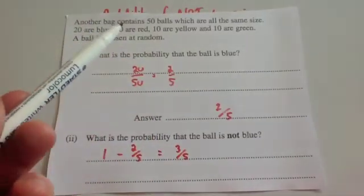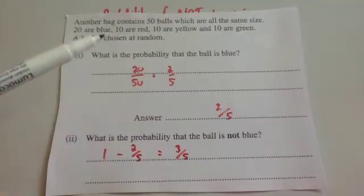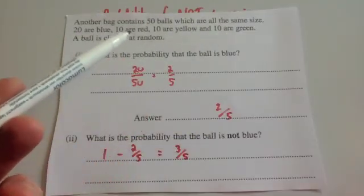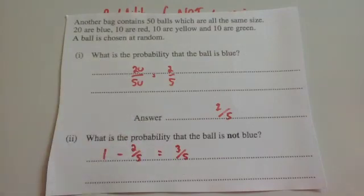Alternatively in this question, because you know there's 10 red, 10 yellow, and 10 green, not blue would be the 10 yellow, 10 red, and 10 green. So that would be 30 out of 50, which, if you cancel down, would be 3 fifths as well.